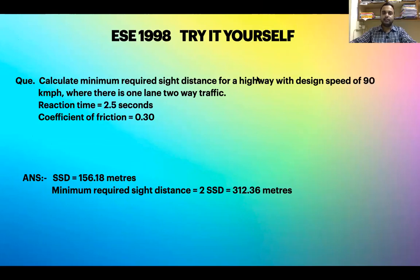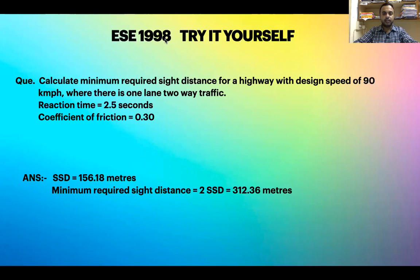Here is a practice problem: Calculate the minimum required sight distance for a highway with a design speed of 90 km/h, one-lane two-way traffic, reaction time of 2.5 seconds, and coefficient of friction of 0.30. Note: if coefficient of friction is not given, use 0.35 as default. This problem was asked in the Engineering Services Examination 1998, conducted by UPSC to recruit engineers for central government departments such as Indian Railways, Military Engineering Services, and CPWD.